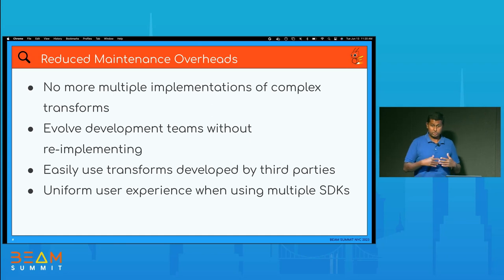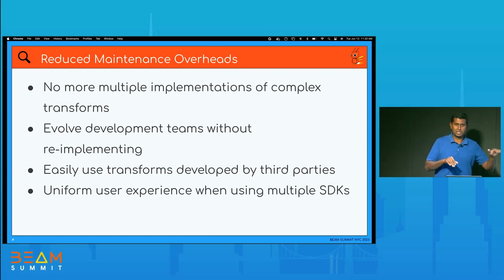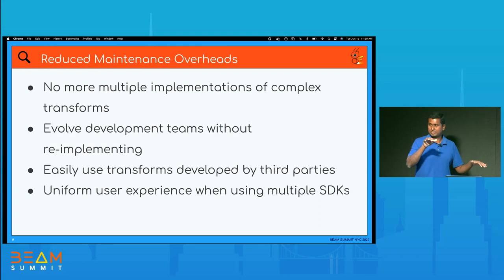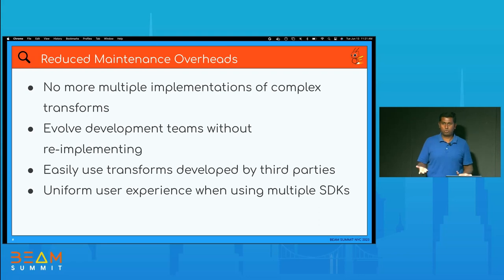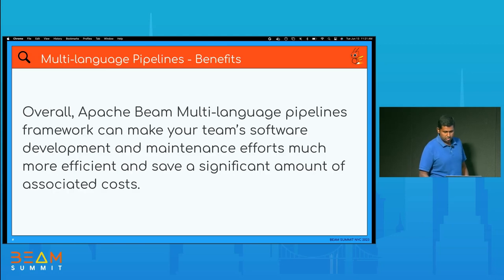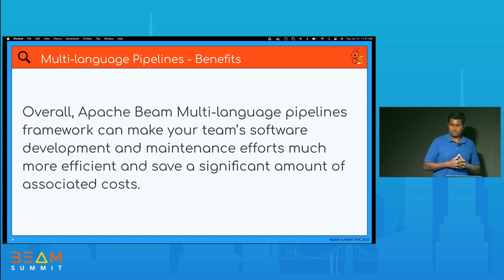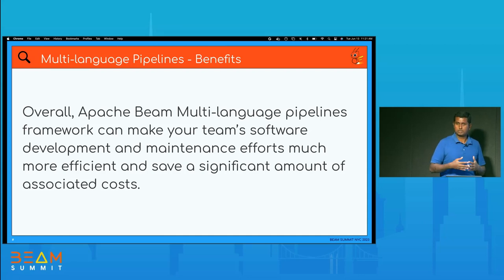This gives a more uniform user experience across different SDKs. For the longest time, we had two implementations of BigQuery for Java and Python — the Java one had many more features than Python, simply because we didn't have time to keep both in sync. With multi-language pipelines, you have one core implementation with all the features, and you just make sure those features are available to all SDKs. Overall, Apache Beam multi-language pipelines can make your software development and maintenance efforts much more efficient, saving significant costs in the long run.